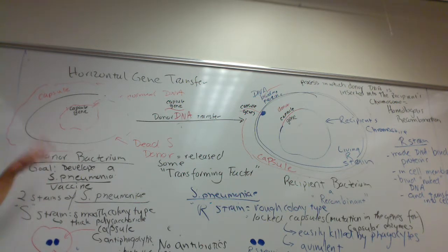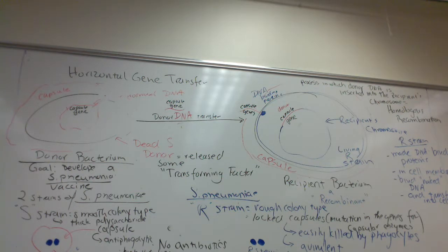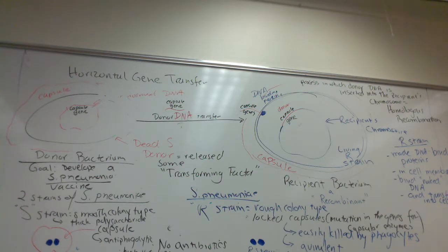In transformation, the donor is dead and the recipient is alive. In conjugation — the next type of horizontal gene transfer — this is the only type where the donor is actually alive.